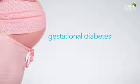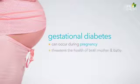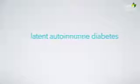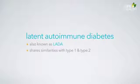Gestational diabetes is another form of diabetes that can occur during pregnancy, threatening the health of both mother and baby. Latent autoimmune diabetes, also known as LADA, shares similarities with both type 1 and type 2 diabetes. We'll discuss this more in an upcoming session.